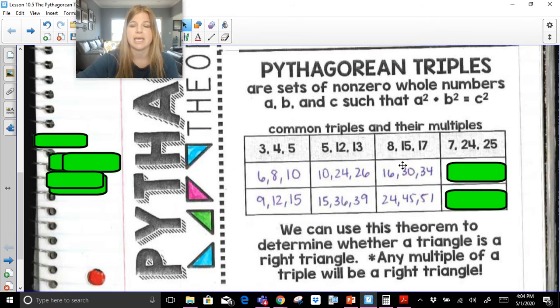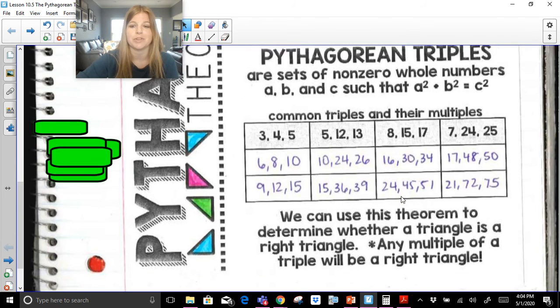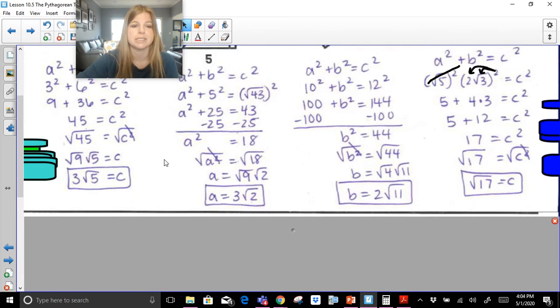5, 12, 13, 8, 15, 17, 7, 24, 25, they're all examples that work. If I plug them in for A, B, and C, they'll give me a true statement. And anything, if I take this triple and I multiply it by 2, that will also work for the Pythagorean theorem. If I took this triple and I multiplied it by 3, that will also work for the Pythagorean theorem. That's what a triple is.